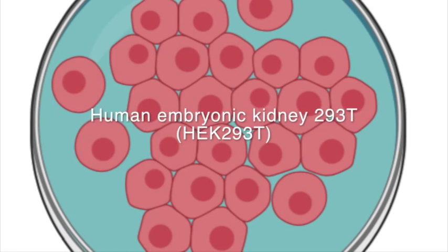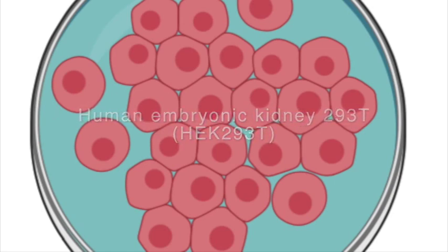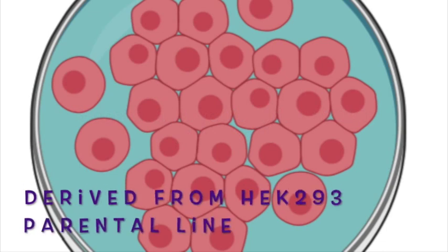So which cells to use? We've already mentioned that HEK293T cells are your most common cells that are used. The T means that this cell line, which is the parental cell line HEK293.